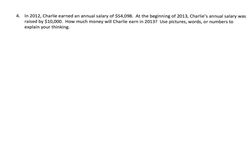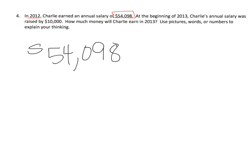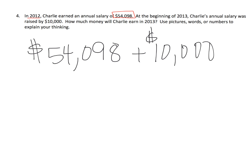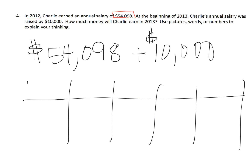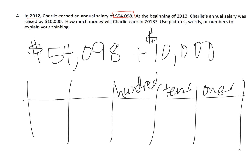The last problem: in 2012, Charlie earned an annual salary of fifty-four thousand ninety-eight dollars. At the beginning of 2013, Charlie's annual salary was raised by ten thousand dollars. So let's use a place value chart with ones, tens, hundreds, thousands, and ten thousands.